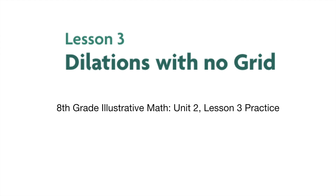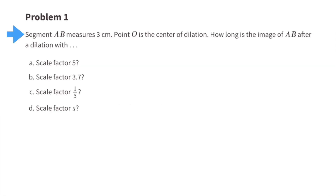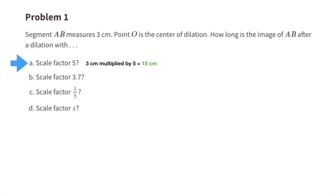8th grade Illustrative Math, Unit 2, Lesson 3: Practice dilations with no grid. Number one: segment AB measures 3 centimeters. Point O is the center of dilation. How long is the image of AB after a dilation with a scale factor of 5? 3 centimeters multiplied by 5 equals 15 centimeters. The image of AB after a dilation with a scale factor of 5 would be 15 centimeters.